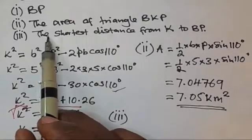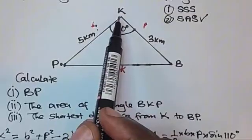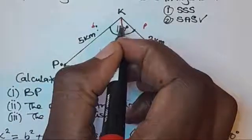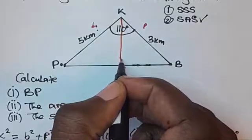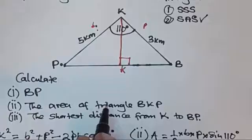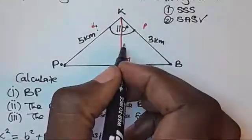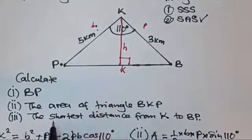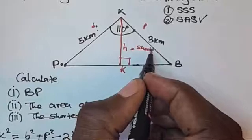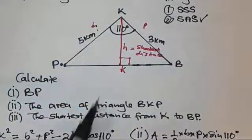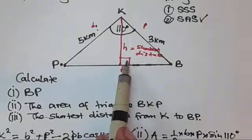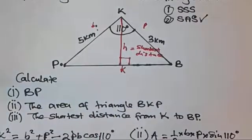For the third question, they want the shortest distance from K to BP. You need to draw a perpendicular line from K down to the line BP. When this line touches BP it will be at 90 degrees, making it the height of the triangle. So the shortest distance equals the height h of the triangle.